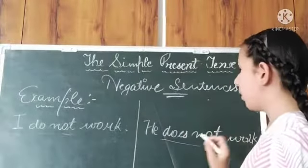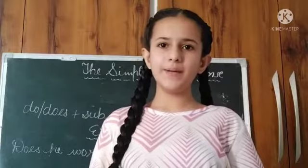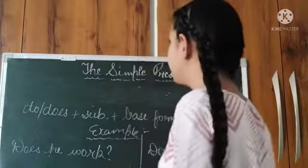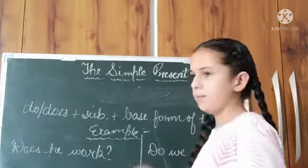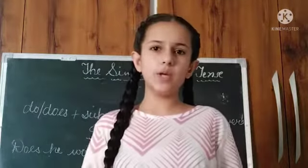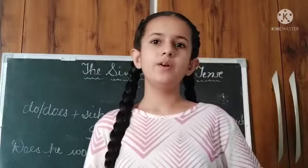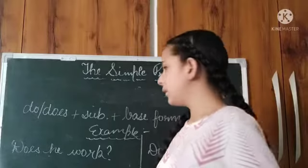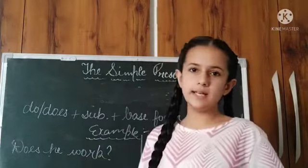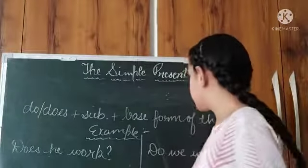Now we will learn how to make interrogative sentences. Interrogative sentences are formed with do or does plus subject plus base form of the verb. Again, with singular we use does and with plural we use do. For example: 'Does he work?' — we use does because he is singular. 'Do we work?' — we use do.